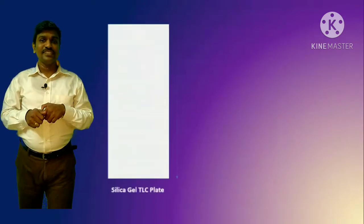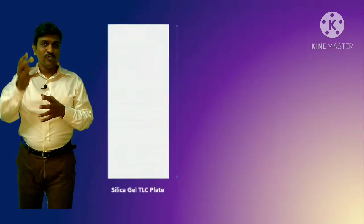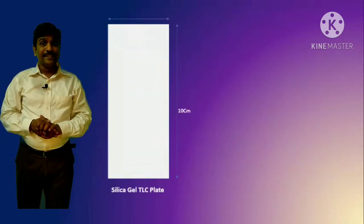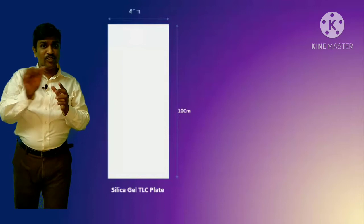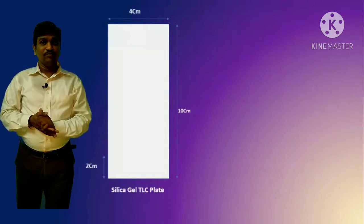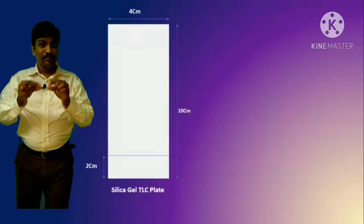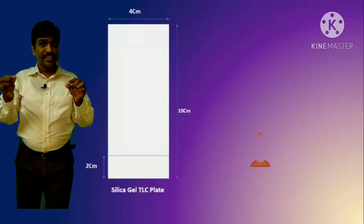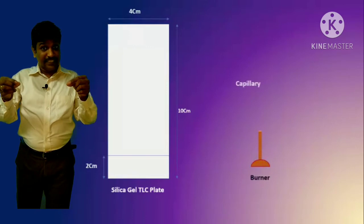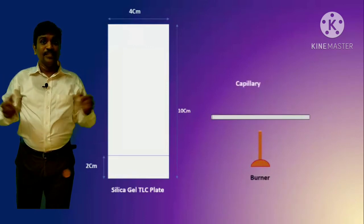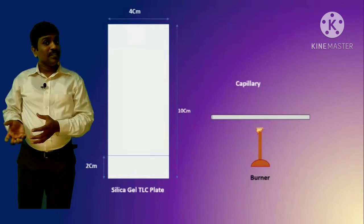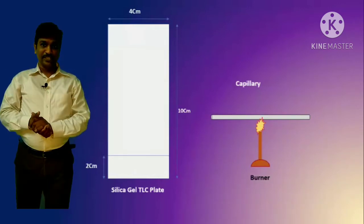The silica gel plate we use is normally 10 cm by 4 cm. Draw the baseline with a pencil — do not use a marker or pen. Prepare the capillary for spotting by burning it at the center until red hot and then pulling it to form a needle shape. Then prepare the mobile phase and keep it for saturation.